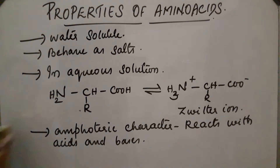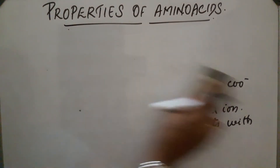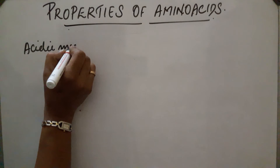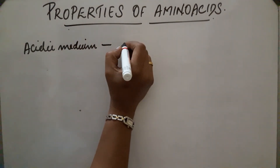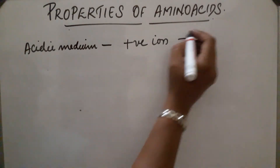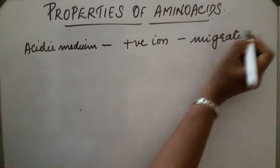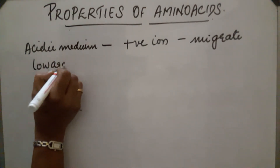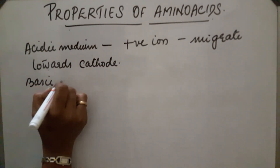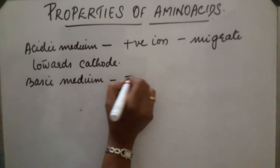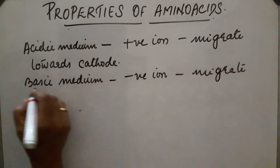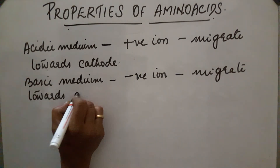In acidic medium, amino acid exists as a positive ion. So when an electric field is applied, this ion will migrate towards the cathode. In basic medium, amino acid exists as a negative ion, so when an electric field is applied, it migrates towards the anode.